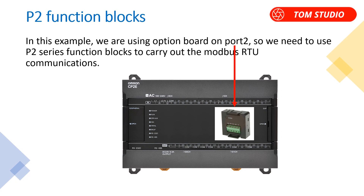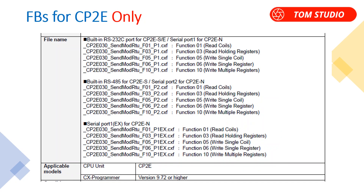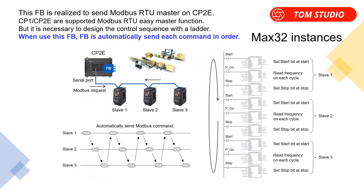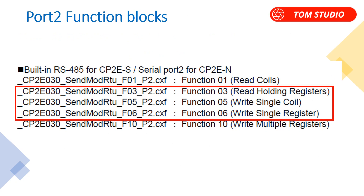All of these function blocks are purely designed for CP2e series PLCs — you cannot use them in CP1L, CP1E, CP1H, and so on. In the past, implementing Modbus serial communications required designing a control sequence inside the PLC program. The new CP2e Modbus function blocks no longer require extra code for command sequence control — they automatically send and receive Modbus commands. In this example, we are using function 3, 5, and 6 — three different function blocks to control and monitor the 3G3 MX2 VSD.